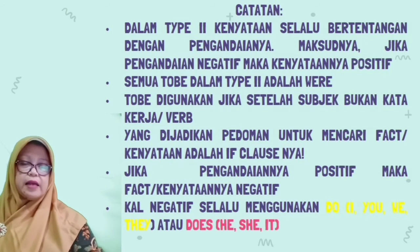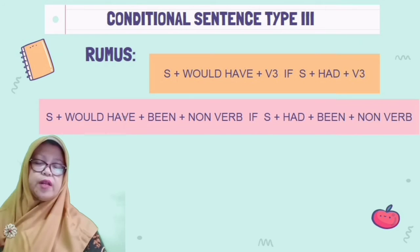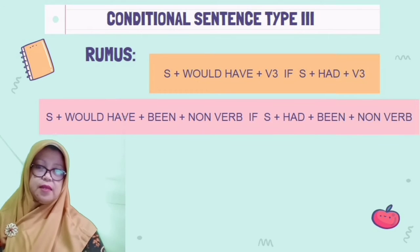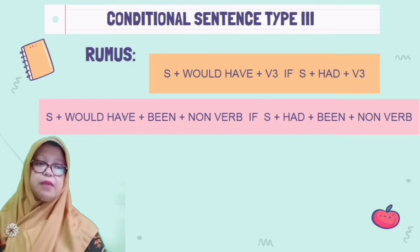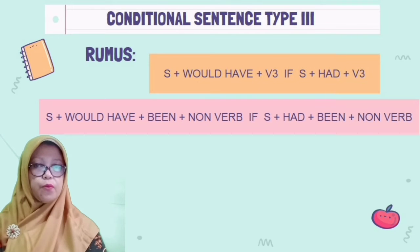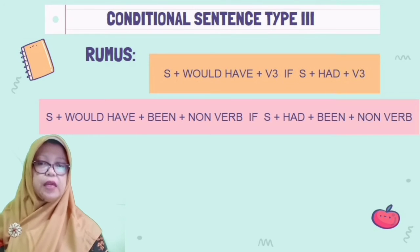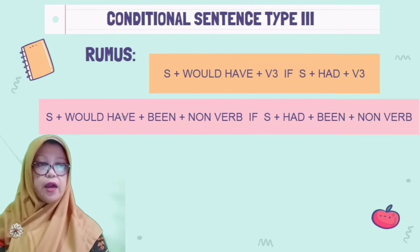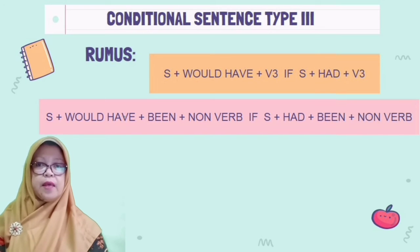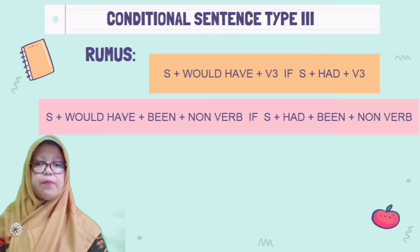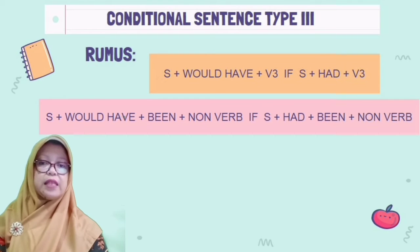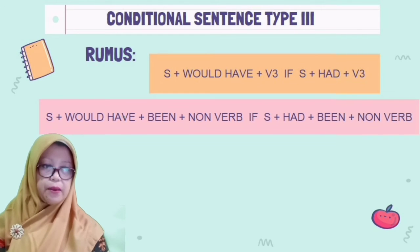Oke, the last — we will talk about conditional sentence type 3. Di dalam kalimat pengandaian tipe ketiga, rumusnya adalah: Subject diikuti modal would, diikuti kata bantu have, diikuti kata kerja ketiga, diikuti if, diikuti subject, diikuti have, dan diikuti kata kerja ketiga.